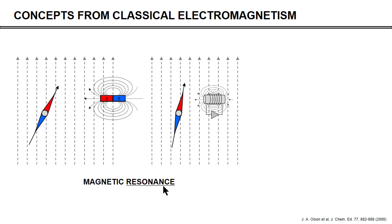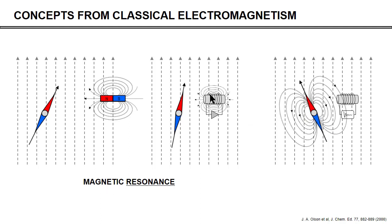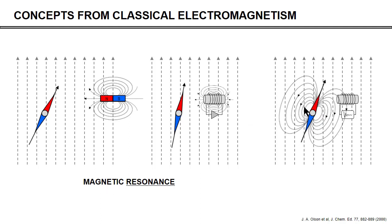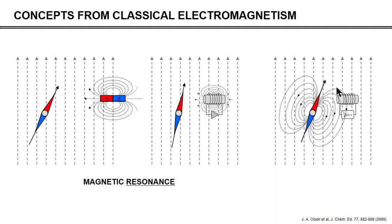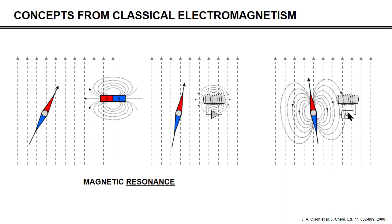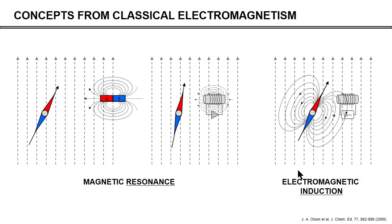So you can see that the magnetic resonance part — the MR part — is just a classical concept. If we now turn off the current in the coil and let the needle oscillate a little bit longer, you have a time-varying magnetic flux through the coil inducing a current in that coil, which is very similar to the free induction decay we will see later. So electromagnetic induction is also a classical concept.